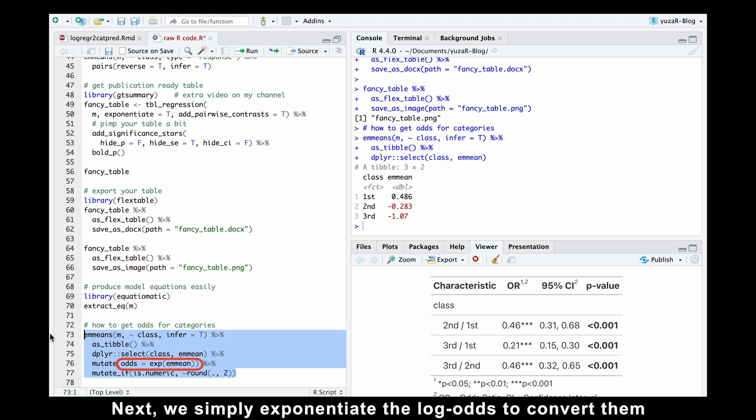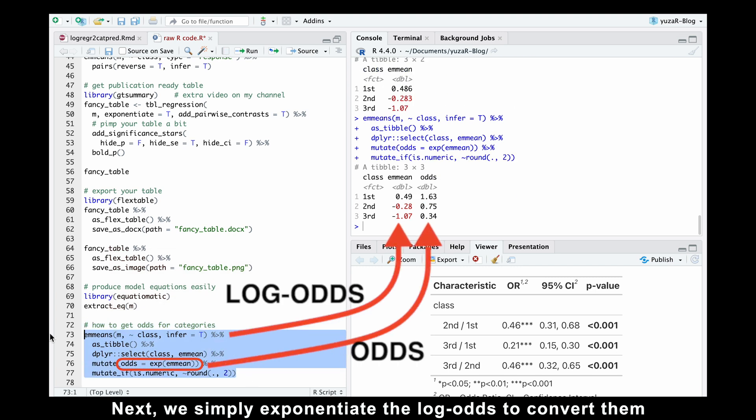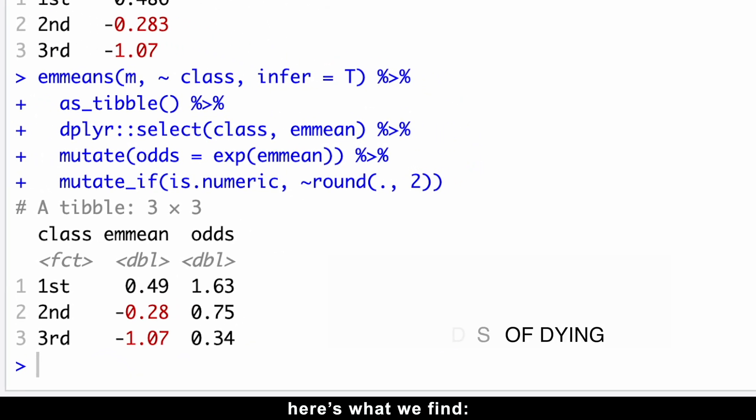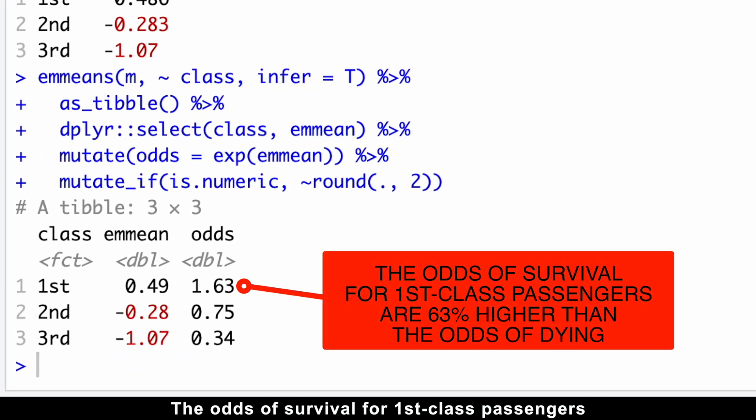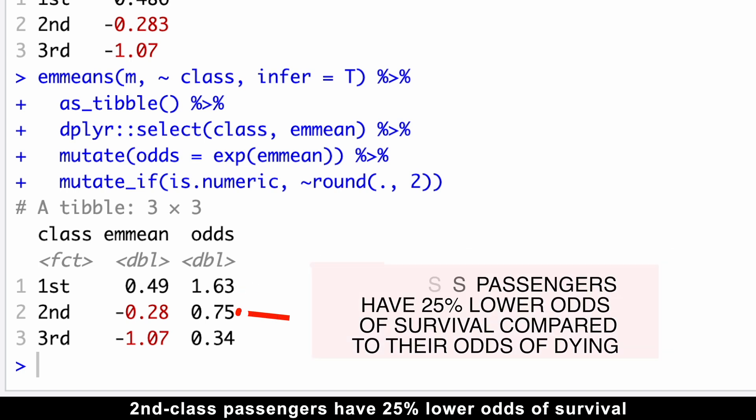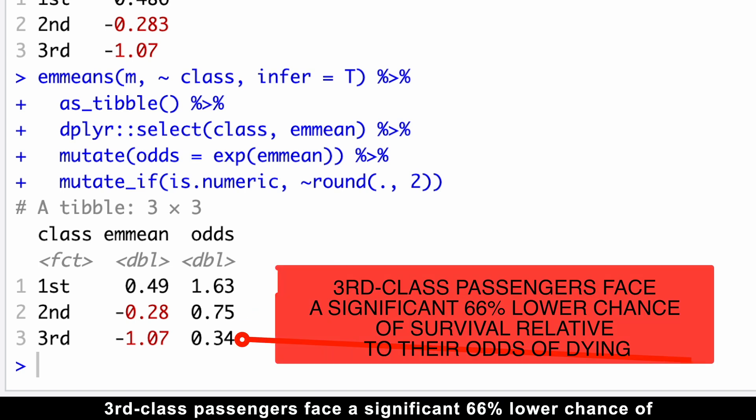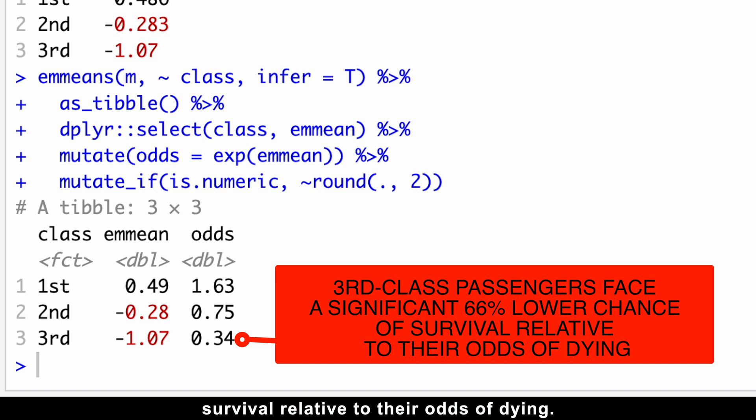Since odds are centered around 1, here's what we find. The odds of survival for first-class passengers are 63% higher than the odds of dying. Second-class passengers have 25% lower odds of survival compared to their odds of dying. Third-class passengers face a significant 66% lower chance of survival relative to their odds of dying.